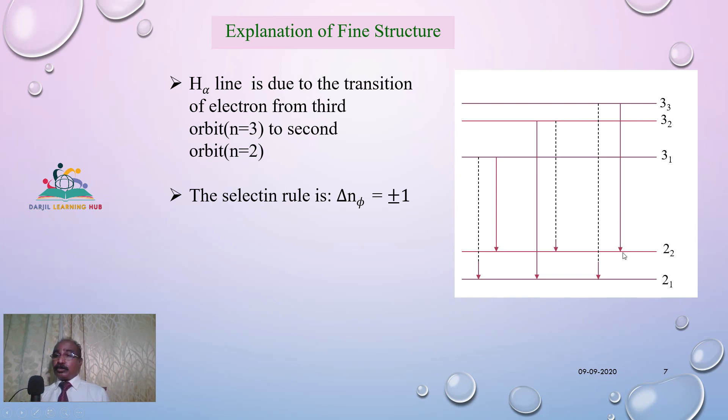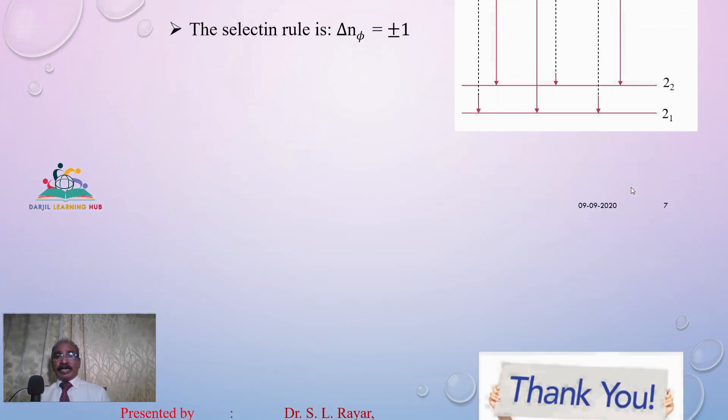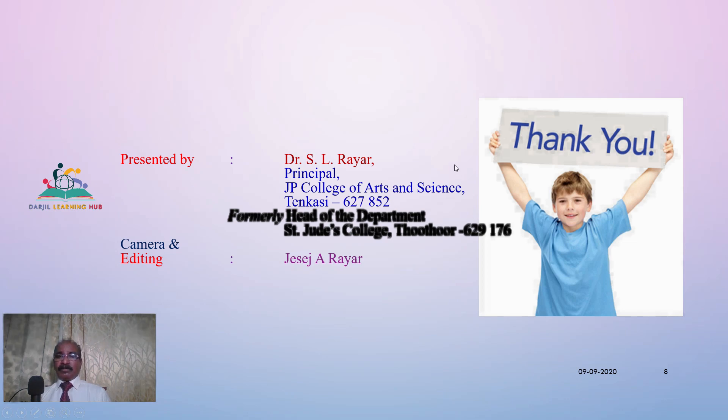In this case, 3-1 to 2-2 is not allowed. 3-2 to 2-2, difference is 0, so this is not allowed. 3-2 to 2-1, difference is 1, therefore this is allowed. Similarly, others are allowed. Therefore, we have only three transitions, therefore three spectral lines. I hope my dear students you would have understood the Bohr-Sommerfield Model. Thank you for listening.